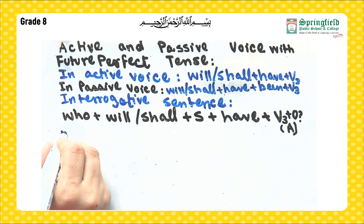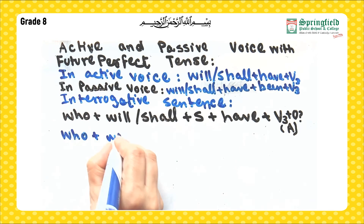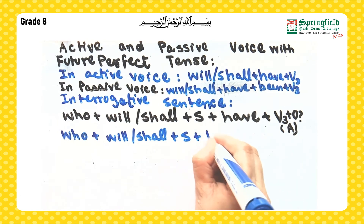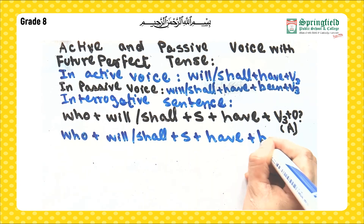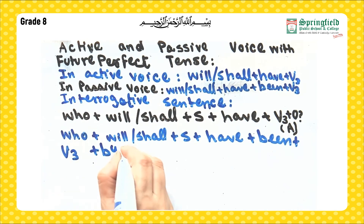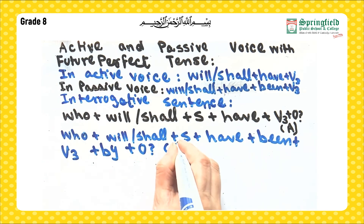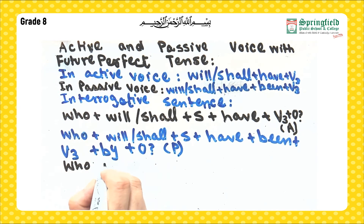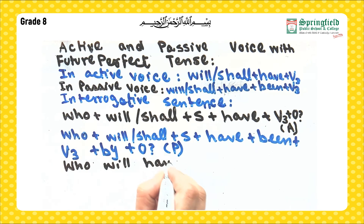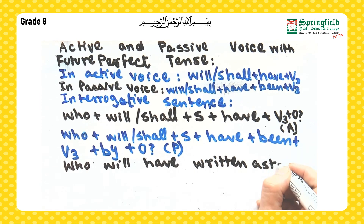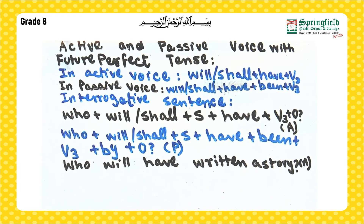When we change it into passive, it becomes: who plus will or shall plus subject plus have plus been plus verb third form plus by plus object, question mark. For example: 'Who will have written a story?' — this is in active voice.